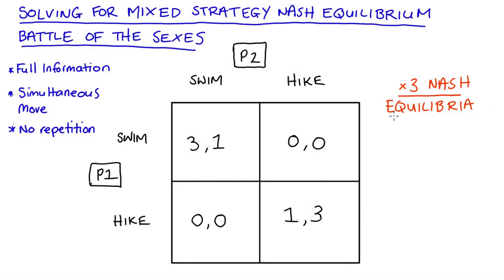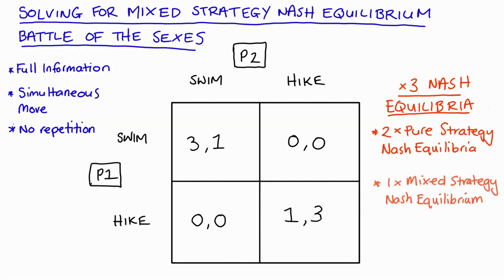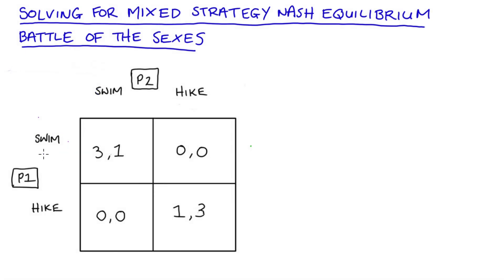Once we allow for mixed strategies, this game actually has three Nash equilibria: two pure strategy Nash equilibria and one mixed strategy Nash equilibrium. You can find the pure strategy Nash equilibria by looking at the table, and I have other videos showing that process. We'll find those anyway when we find our mixed strategy Nash equilibrium. So I'll introduce mixed strategies: player one will play swim with probability r and hike with probability one minus r, while player two will play swim with probability q and hike with probability one minus q.